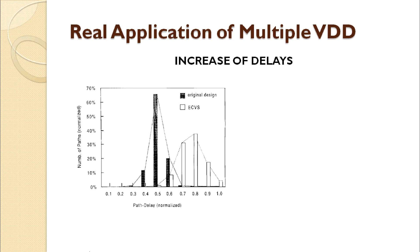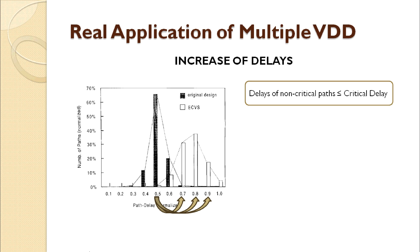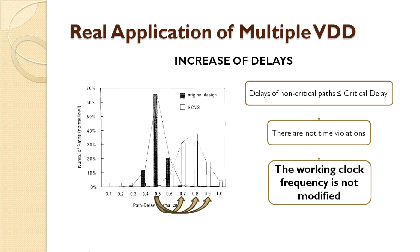Once we have the value of the VDD-L voltage, we obtain the following graph, which compares the percentage of paths in relation to the delay of the original design in black and the design with multiple VDD voltages in white. According to the figure, in the original design the most paths have a normalized delay of 0.5, while applying multiple VDD voltages the delay has increased, with distribution of most paths between 0.7, 0.8, and 0.9. As we stated above, applying two voltages the delay increases, but never exceeds the value of the critical delay. In that way, there are no timing violations, so the working clock frequency is not modified.